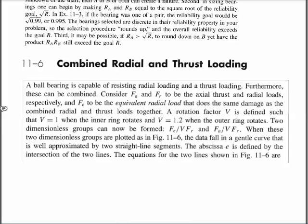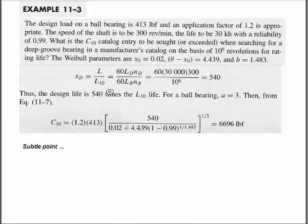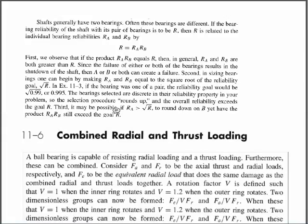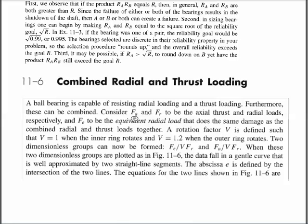We're going to talk about a bearing that has to carry an axial load FA and a radial load FR. A bearing capable of carrying those two loads — but we only have one load in the catalog. We've got to turn these two loads into one equivalent load that represents the equivalent damage caused by both. So we find an equivalent radial load that does the damage of both, and that's what we'll take to the catalog.